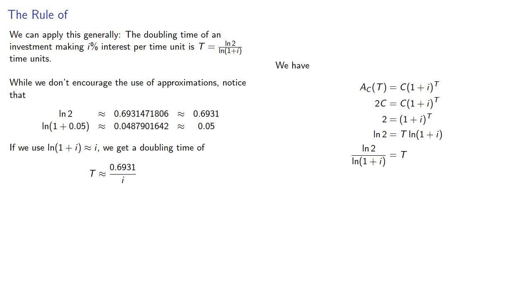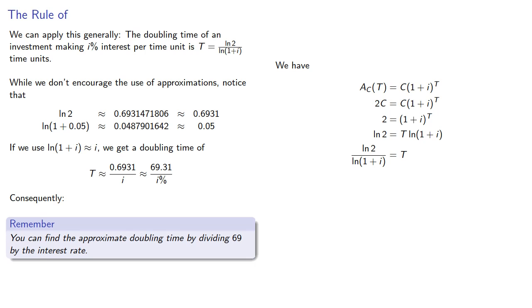Or, if we want to express things in terms of the actual percentage rate, we can multiply by 100. Consequently, you can find the approximate doubling time by dividing 69 by the interest rate. For example, at 5% interest, the doubling time is approximately 69 fifths, 13.8 years.